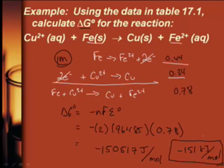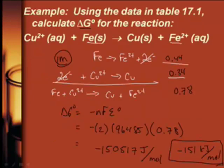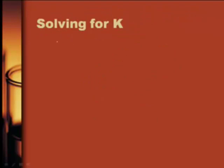All right, so that is the value of delta G — not terribly difficult. So on that last problem, we found delta G naught to be negative 151 kilojoules per mole.